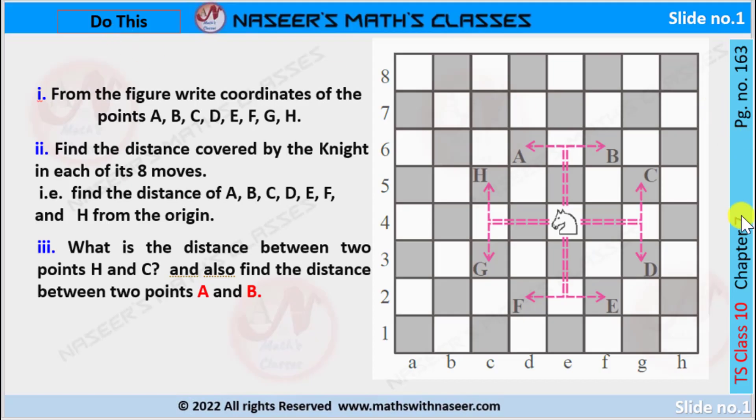Do this page number 163, chapter 7, coordinate geometry. From the figure, read the coordinates of the points A, B, C, D, E, F, G, H.